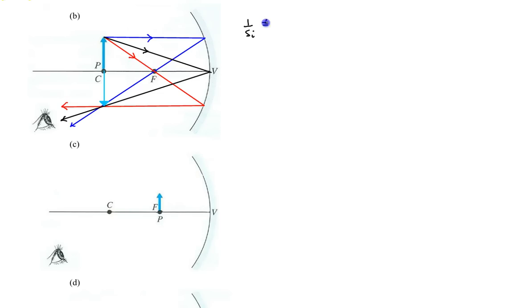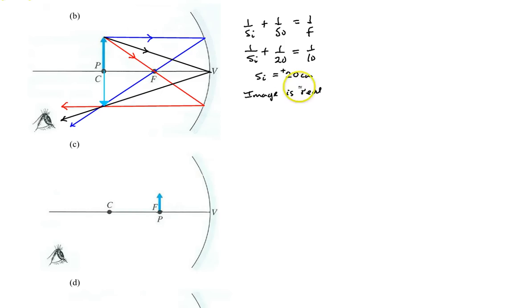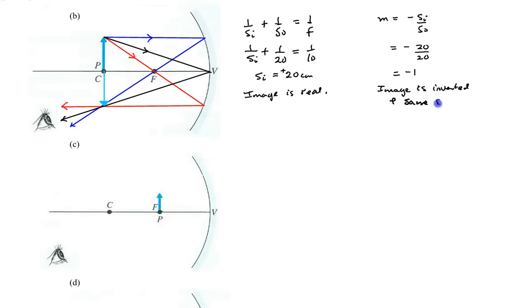Let's compute the mathematics and see if that matches the ray diagram. Using 1/SI + 1/SO = 1/F, the object distance was 20 centimeters and the focal length is 10 centimeters. Computing that gives an image distance of 20 centimeters. This tells us the image is real because it's a positive image distance — in front of the mirror. The magnification is negative SI over SO: negative 20 over 20 gives negative 1. The image is inverted, and the magnification of 1 means it's the same size.